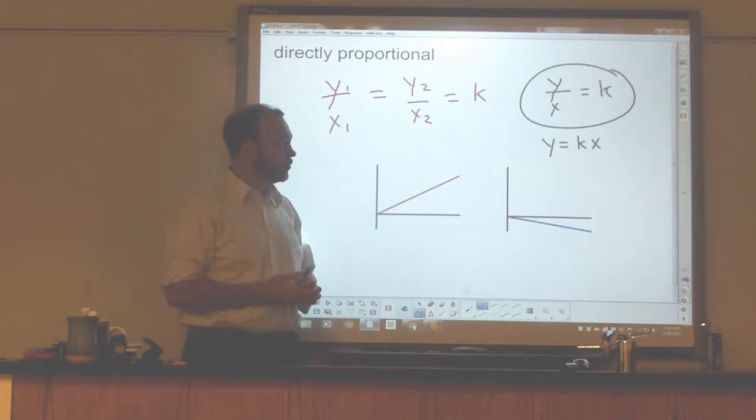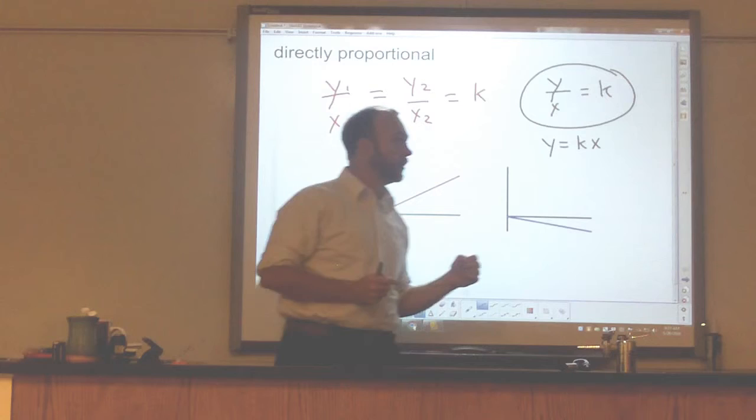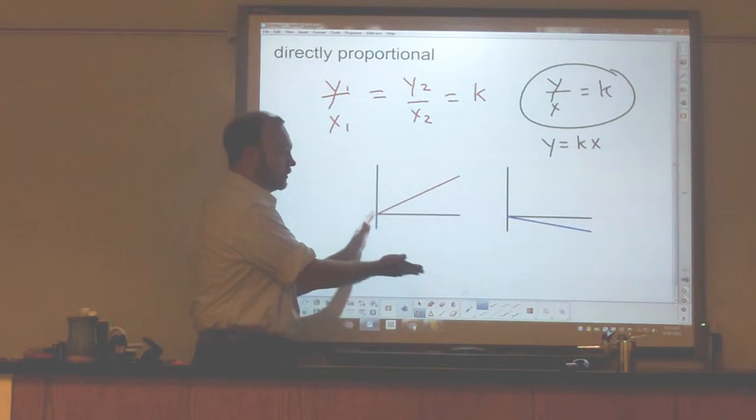Now, you should recognize this equation. You should recognize it as a straight line. It's a straight line with a slope of k and a y-intercept of zero. Any time you graph something that is directly proportional, you get a straight line.